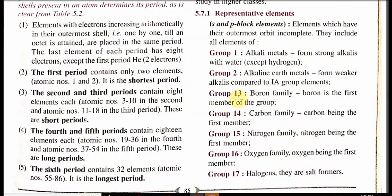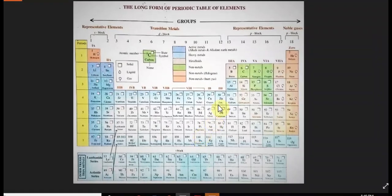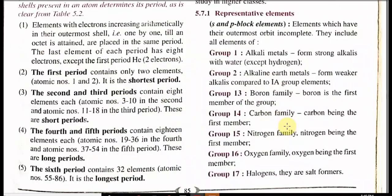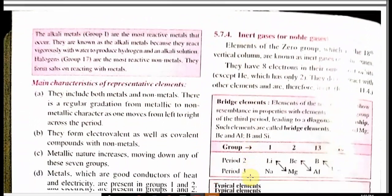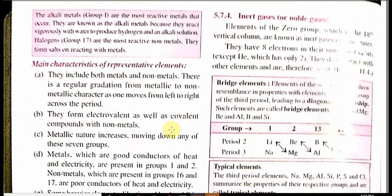You can see group 13 — boron is first; group 14 — carbon; group 15 — nitrogen is first; group 16 — oxygen is first. Group 17 elements are also called halogens because they are generally salt producers: chlorine, fluorine, bromine, iodine are group 17 elements. The alkali metals are the most reactive metals — they are very soft and produce bases that are highly soluble in water, so they are called alkali metals.